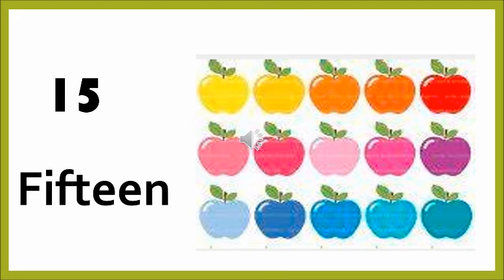Now moving on to the next one — you can see the apples. Let's count: 1, 2, 3, 4, 5, 6, 7, 8, 9, 10, 11, 12, 13, 14 and 15. Now let's say the spelling of 15: F-I-F-T-E-E-N. 15. Children, it is not written as 15 with five, it is FIFTEEN. So let's say it once more: F-I-F-T and then T-E-E-N. So you can see 13, 14, 15 — they all end with teen.